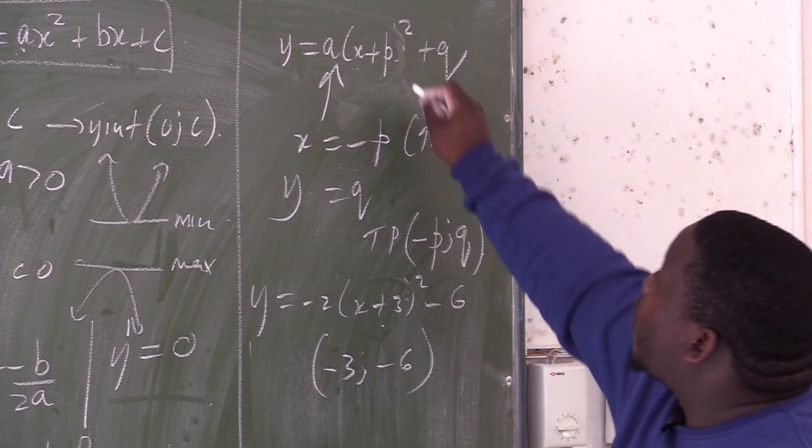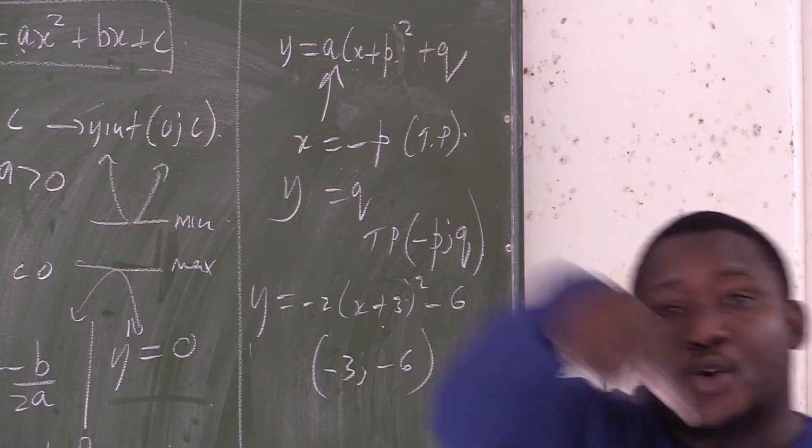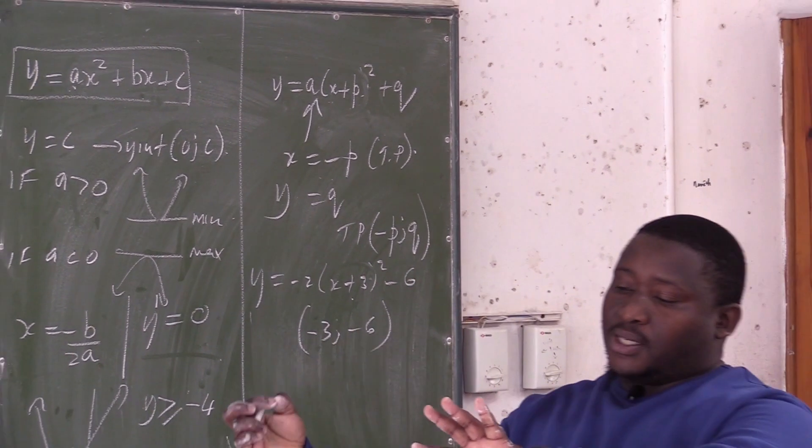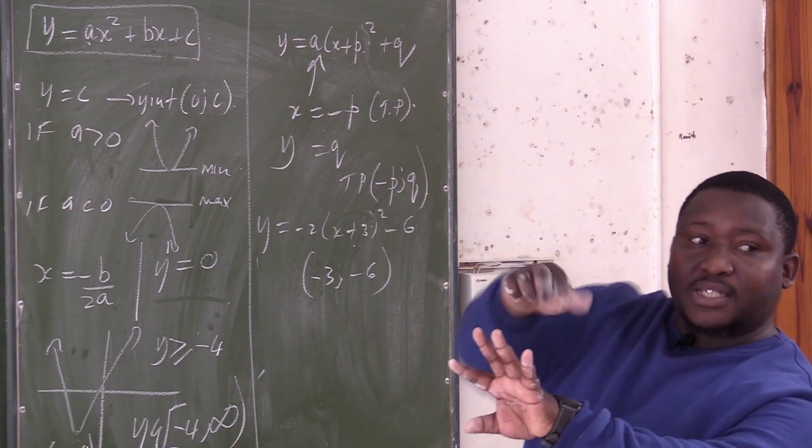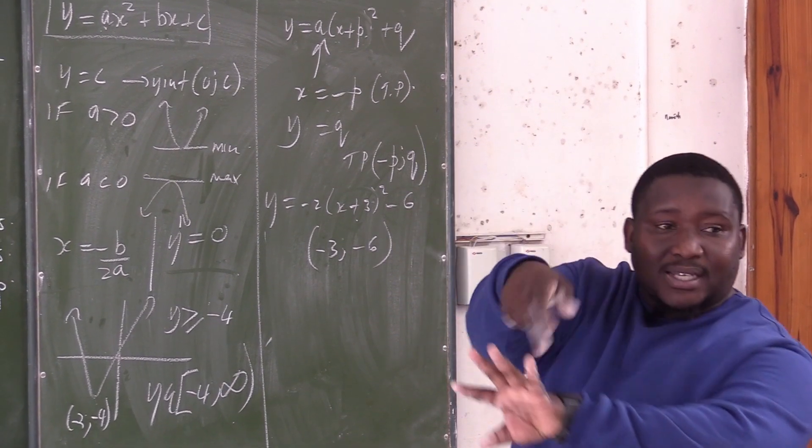The only thing that you have to calculate if it's given in that form are your intercepts. Your x-intercept as well as your y-intercept. Your x-intercept, y is 0. Y-intercept, x is 0. X-intercept, y is 0. Y-intercept, x is 0.